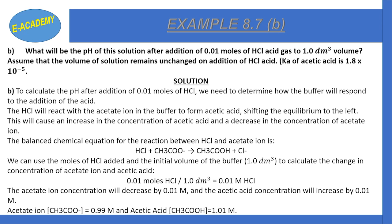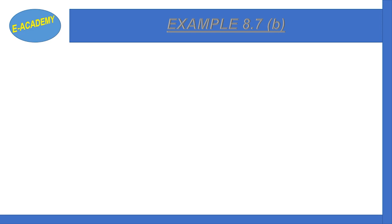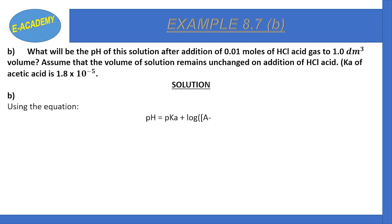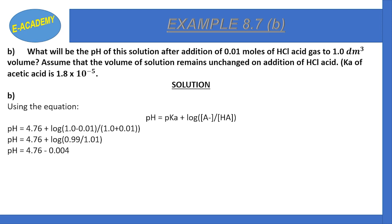The acetate ion concentration decreases by 0.01 molar: 1.0 − 0.01 = 0.99 molar. The acetic acid concentration increases by 0.01 molar: 1.0 + 0.01 = 1.01 molar. Using pH = pKa + log([A⁻]/[HA]): pH = 4.76 + log(0.99/1.01) = 4.76 − 0.004 = 4.756.